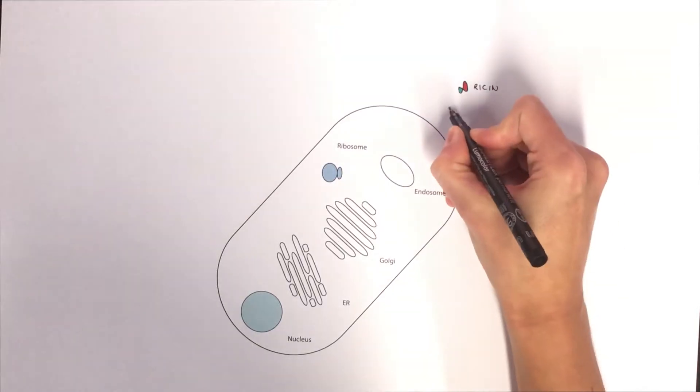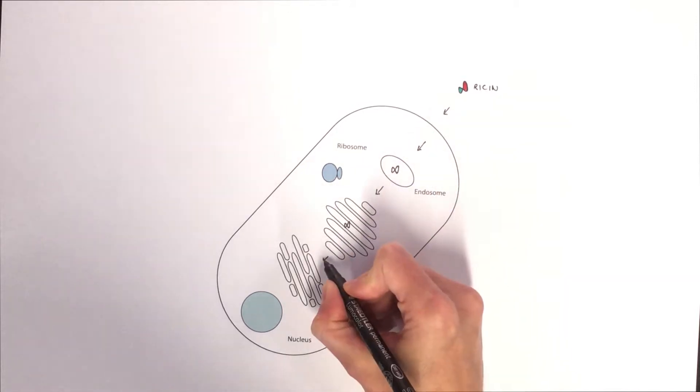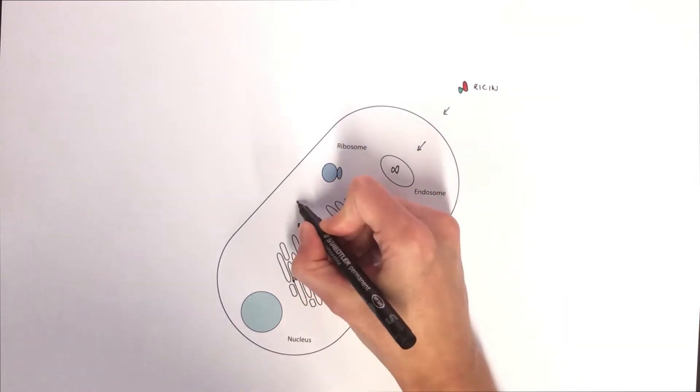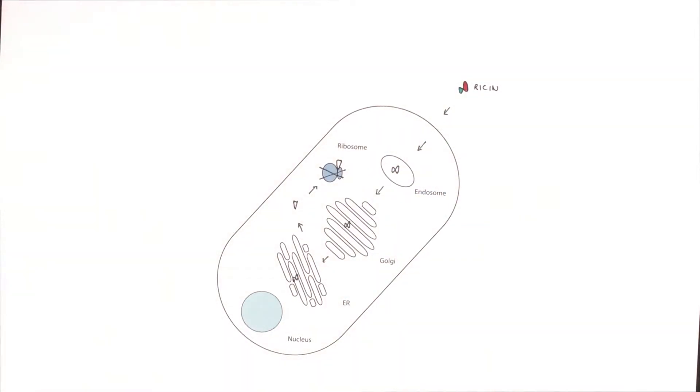To kill its target cells, Ricin binds to the surface and is taken up into early endosomes, the Golgi and the ER. It is then transported to the cytoplasm, wherein it inhibits the ribosomes, the protein biosynthesis machinery of a cell, and leads to cell death.